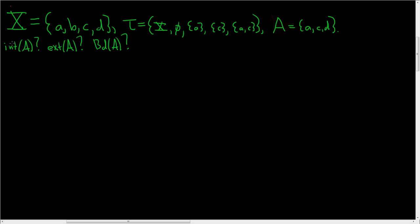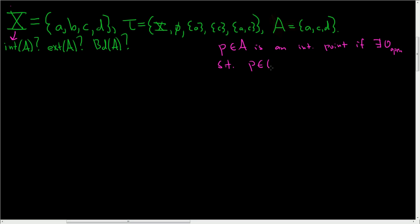The interior of A is the set of all interior points. What's the definition of an interior point? P in A is an interior point if there exists some open subset — I'll just say O open — such that little p is in O, and O is contained in A.